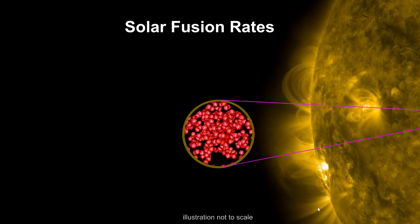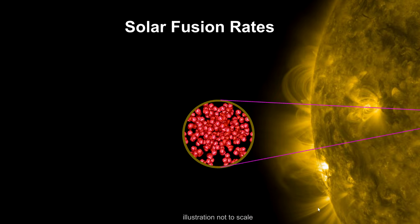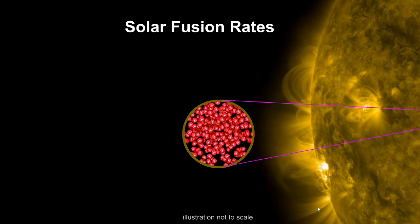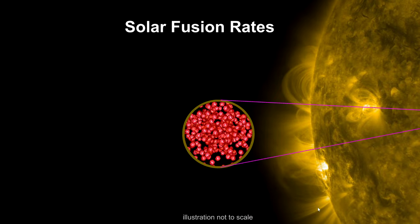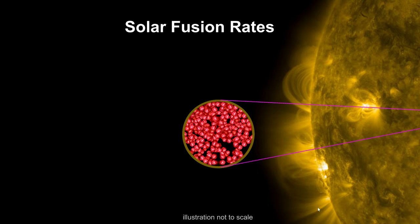In order to understand why star luminosity is so sensitive to small increases in temperature, we need to see how this barrier is breached. We'll start with a look inside the Sun's core.